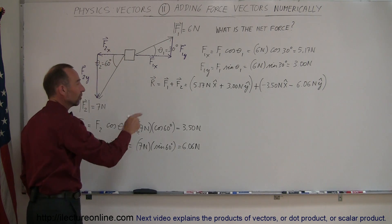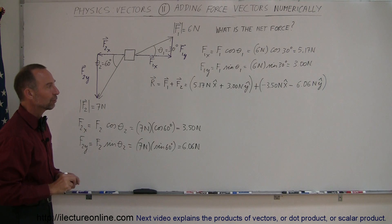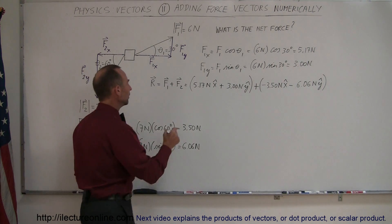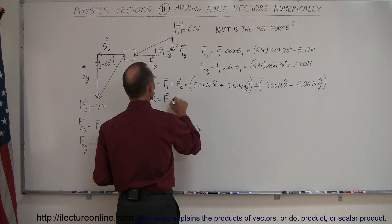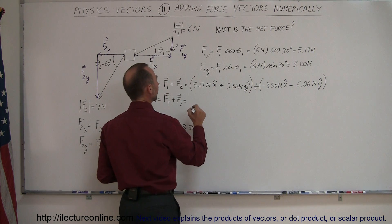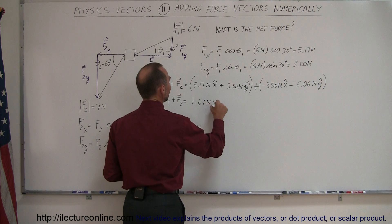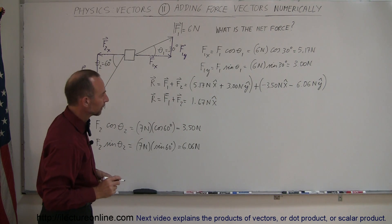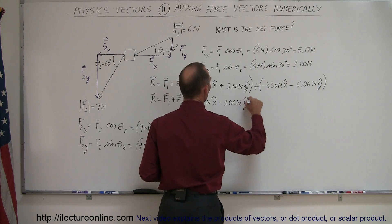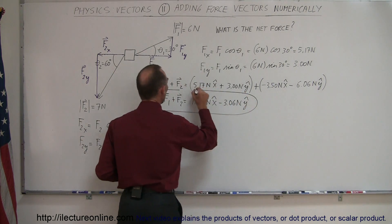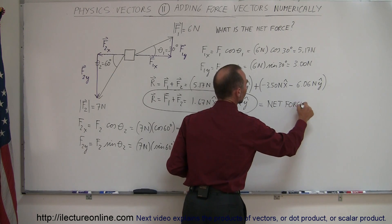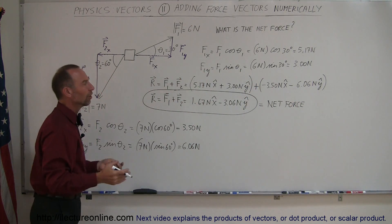So when I add the two vectors together, I put a negative sign in front of each component of vector 2 — it's not just magnitude, it also includes direction. Adding those together: 5.17 minus 3.50 gives 1.67 Newtons in the X direction. And 3.00 minus 6.06 gives minus 3.06 Newtons in the Y direction. This is the resultant force, which can also be considered the net force on the object. When they ask for net force, they're really asking for the resultant — the sum of the two forces.